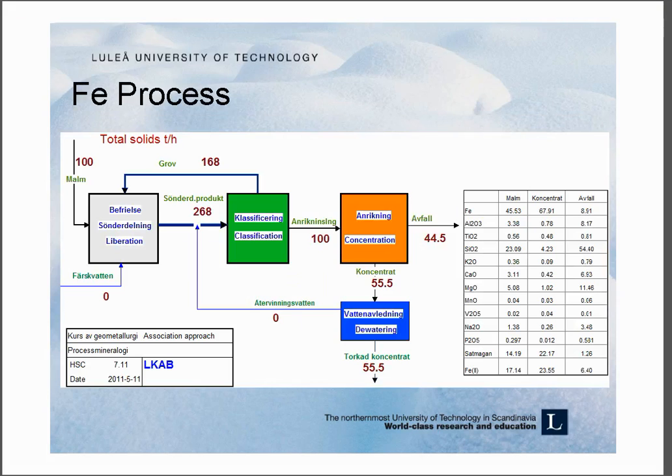It's the iron process, and it's very simplified. So there's ore which is fed into the stage of liberation, a crushing and grinding stage. And crusher product is sent to the classifier. Coarse material returns back. And then fine material goes to the concentration, which includes magnetic separator and flotation.